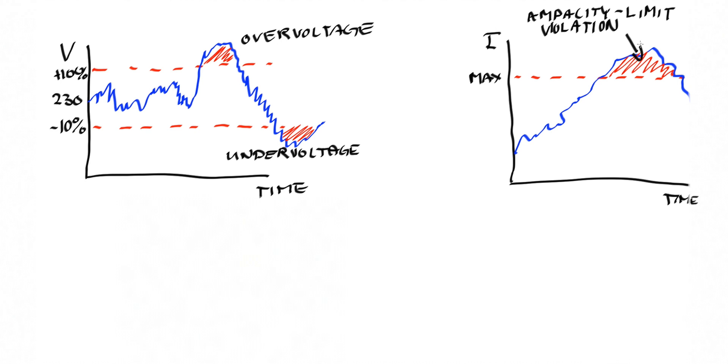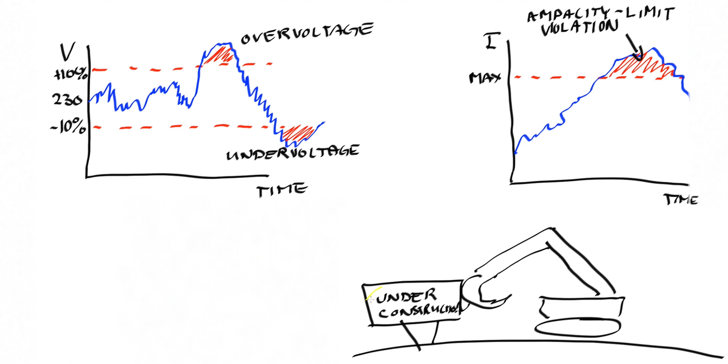However, these mechanisms should be viewed as a last resort because when they are triggered, a blackout might occur. To mitigate some of the problems just mentioned, one could invest in grid reinforcements, for example, by increasing the grid's capacity. Unfortunately, such reinforcements are typically very expensive.